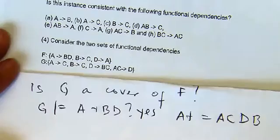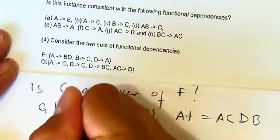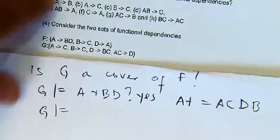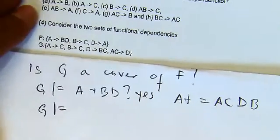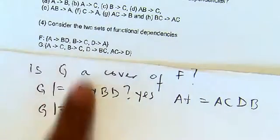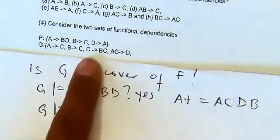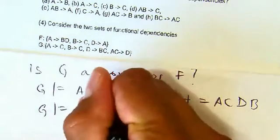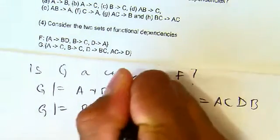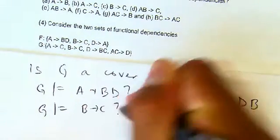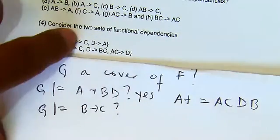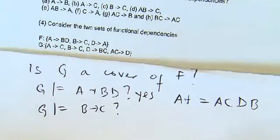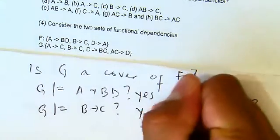Now we check if G can logically imply the second functional dependency, B→C. This is already given directly in G, so the answer is yes.